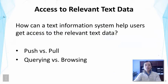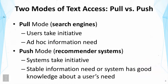So the main question we address here is, how can a text information system help users get access to the relevant text data? We're going to cover two complementary strategies: push versus pull. And then we're going to talk about two ways to implement the pull mode: querying versus browsing.